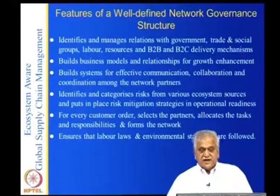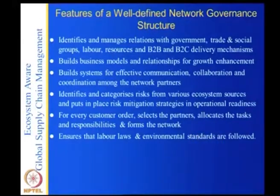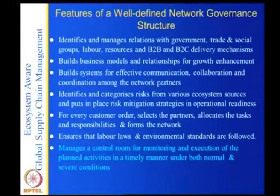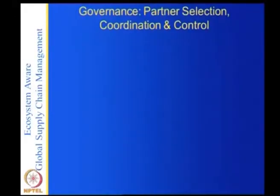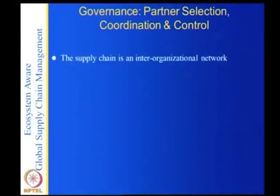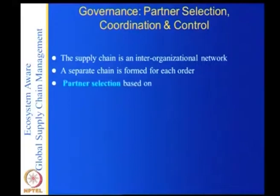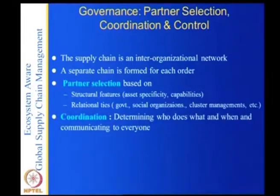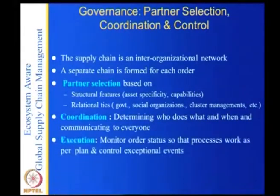The governance structure also ensures labor laws and environmental standards are followed, because in a global supply chain these need to be adhered to. It manages the control room for monitoring execution, since planning needs to be executed properly. So governance, partner selection, coordination, and control are the three key things. The supply chain is an internal organization network, a separate chain is formed for each order, partner selection is based on structural features and relational ties, coordination determines who does what and when, and execution monitors order status so the process works as per plan.